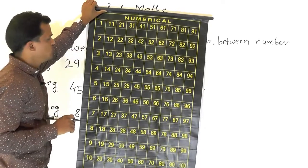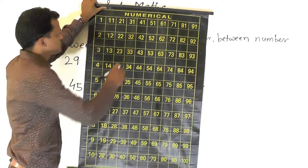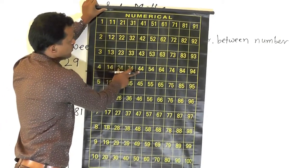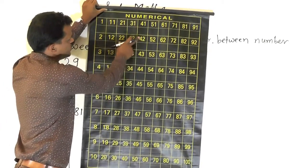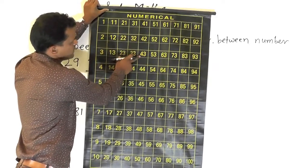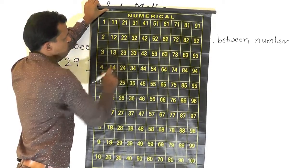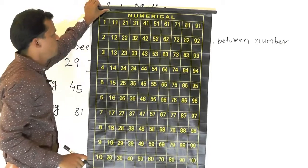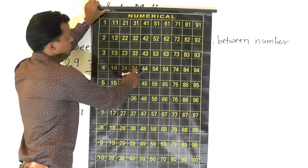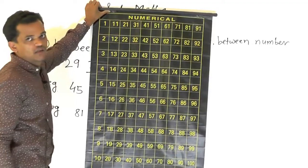Now between number. Between number here: 42 and 44. Which number comes in between these two numbers? That is 43. So the between number of 42 and 44 is 43.